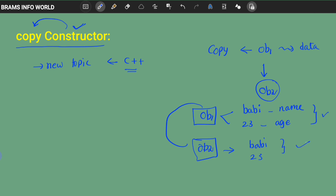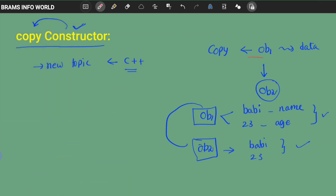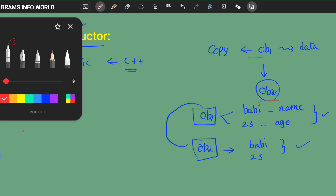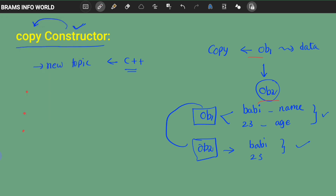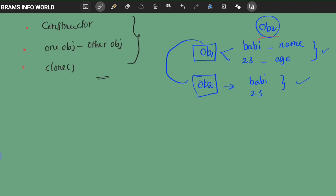To copy basic values from one object to another object, there are three ways — you can write any of these in an examination. With the help of a constructor, with the help of a method, and with the help of the clone method — these are the three ways we are going to implement the concept of copy constructor.